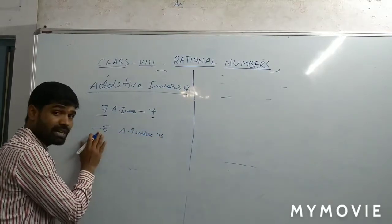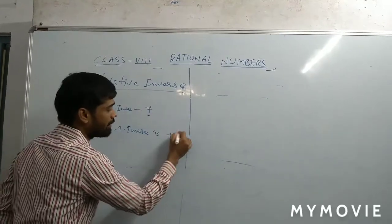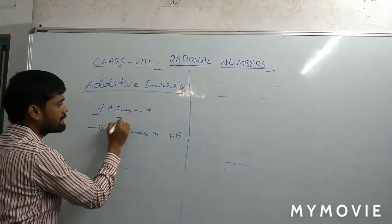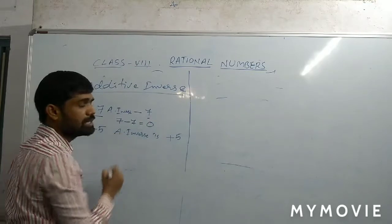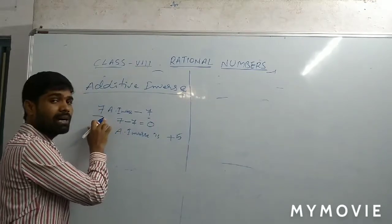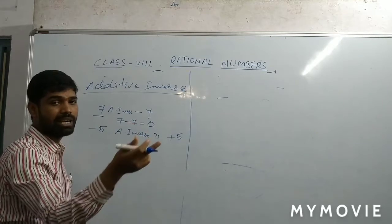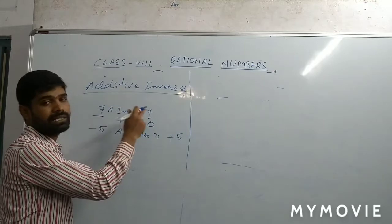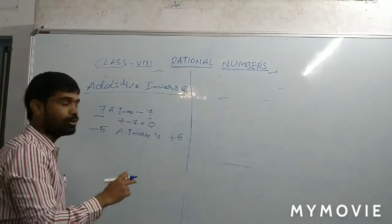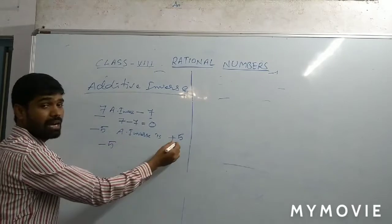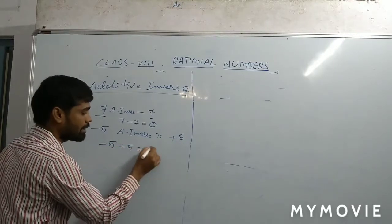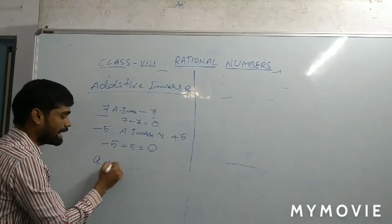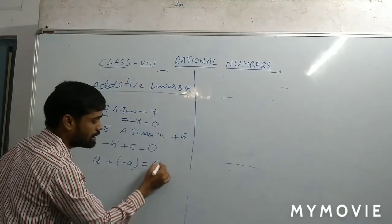Minus 5 — here minus — so what is the additive inverse? Plus 5. For example, 7 and minus 7: the answer is 0. Means, a rational number and its additive inverse sum to 0. When we add a rational number and its additive inverse, the answer is 0. Like that, minus 5 and its additive inverse plus 5: the sum is equal to 0. Therefore, A additive inverse is minus A, and the answer is 0.